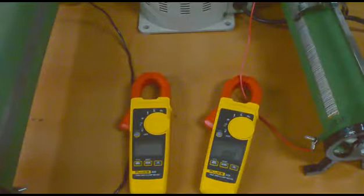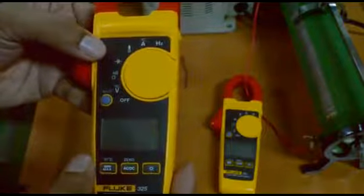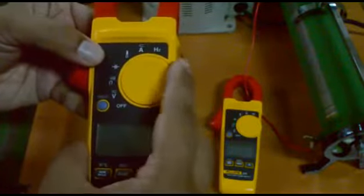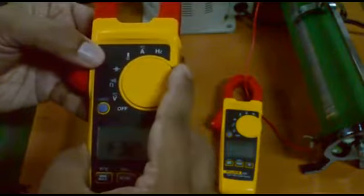Features and usage of the True RMS clamp meter by Fluke. The meter can be turned on by keeping the knob on the desired measurement mode. It can measure AC and DC voltages up to 600 volts.